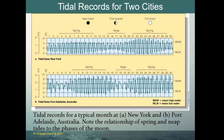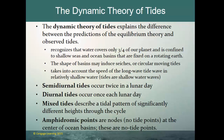The dynamic theory of tides explains the difference between the predictions of the equilibrium theory and the observed tide. It recognizes that water covers only three-quarters of the planet and is confined to shallow seas and ocean basins fixed on the rotating earth. The shape of those basins may induce different types of tidal movements, including seiches — water sloshing back and forth — or circular moving tides. It also takes into account the speed of the long-wave tide in relatively shallow waters. Tides are always shallow water waves — they always feel the bottom.